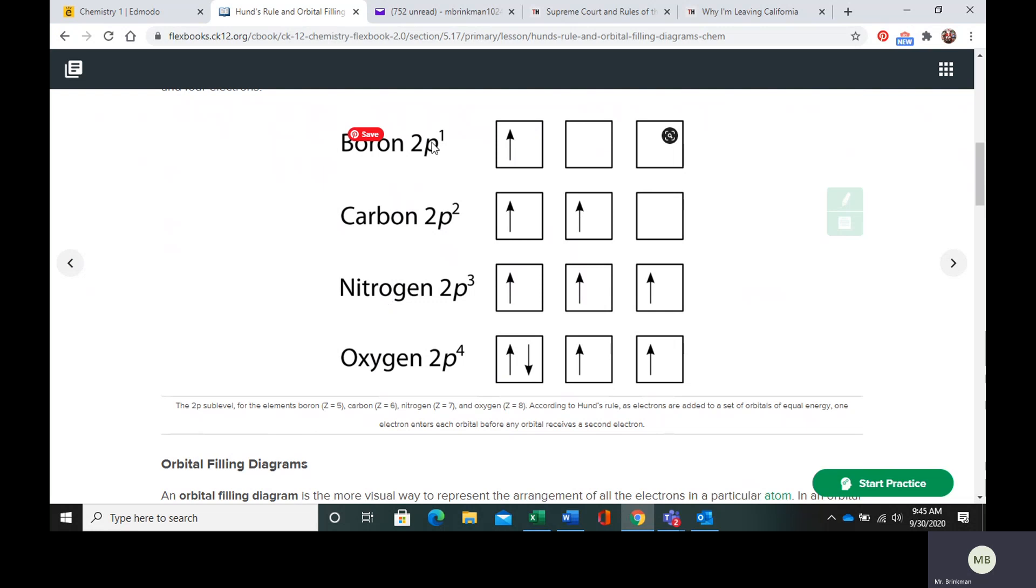So boron, the 2p orbital is the last one to be filled with an electron. That's simple because the electron is going to have the up arrow. It's going to have the positive spin.